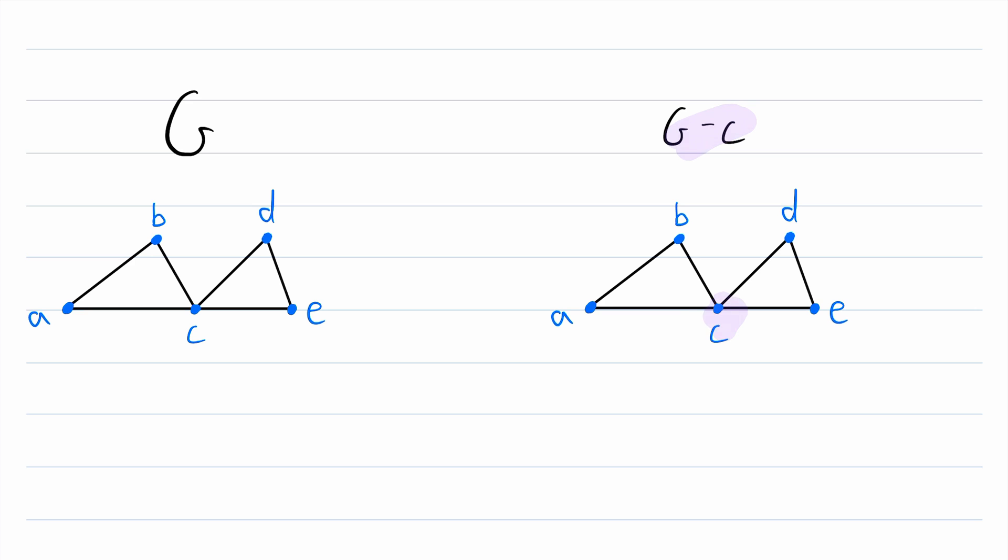When we subtract or delete a vertex from a graph, what we have to do is first remove the vertex. So remove that vertex C from this graph. But there also might be edges that were joining that vertex to other vertices. Since the vertex is no longer in the graph, we have to also delete the edges that were incident to the vertex we deleted. So in this case, all of these edges were incident to the vertex C. Since we deleted C, we can no longer have these edges in our graph, so they have to go too. And then that's it.